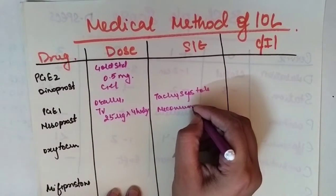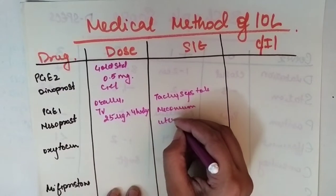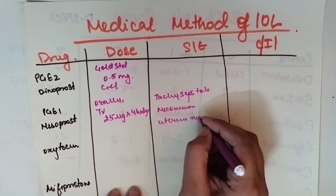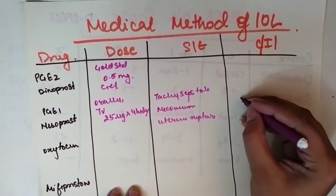Misoprostol can't be used in previous C-section if the lady has previous C-section.